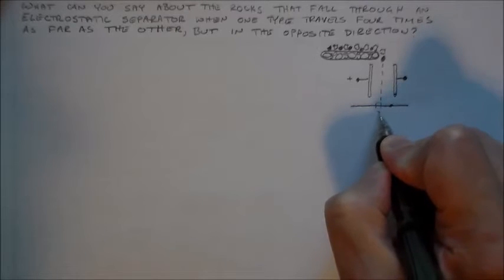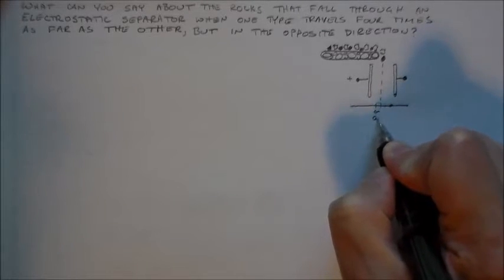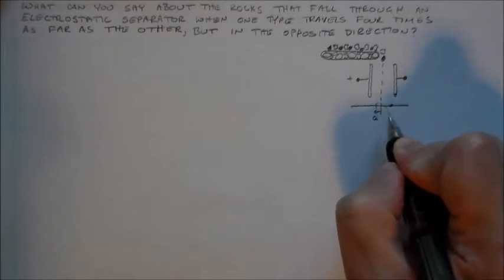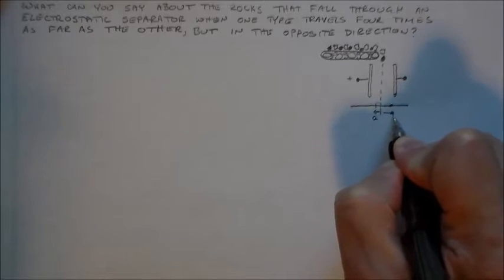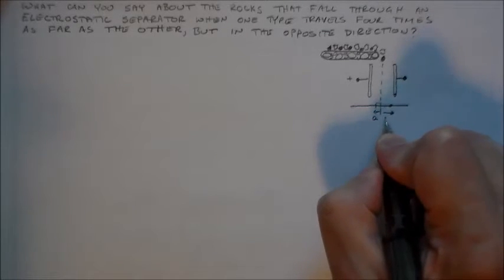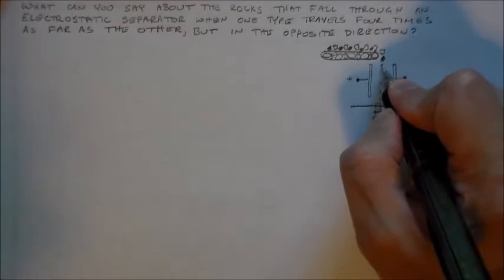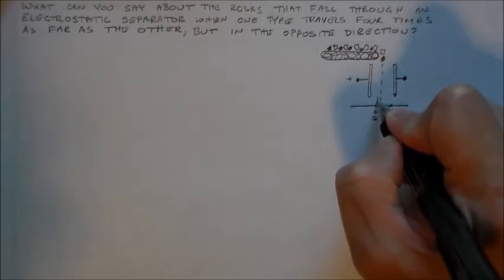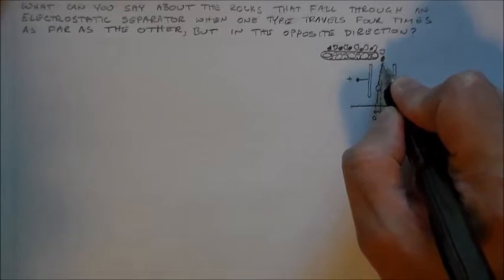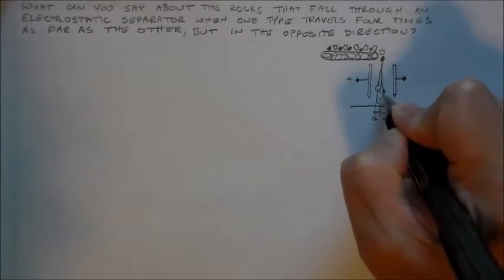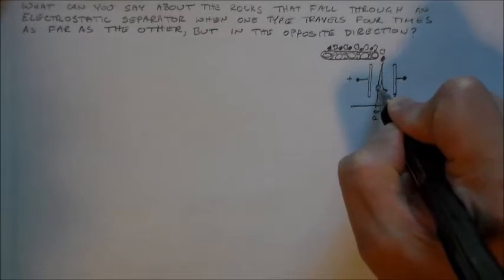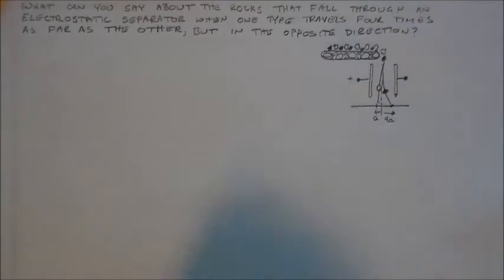And one pile is a distance, say, A from the center line. And the other side, the other line is, say, 4A, four times as far. So let's say the white ones go this way, and the black ones go that way. So they feel slightly different forces.